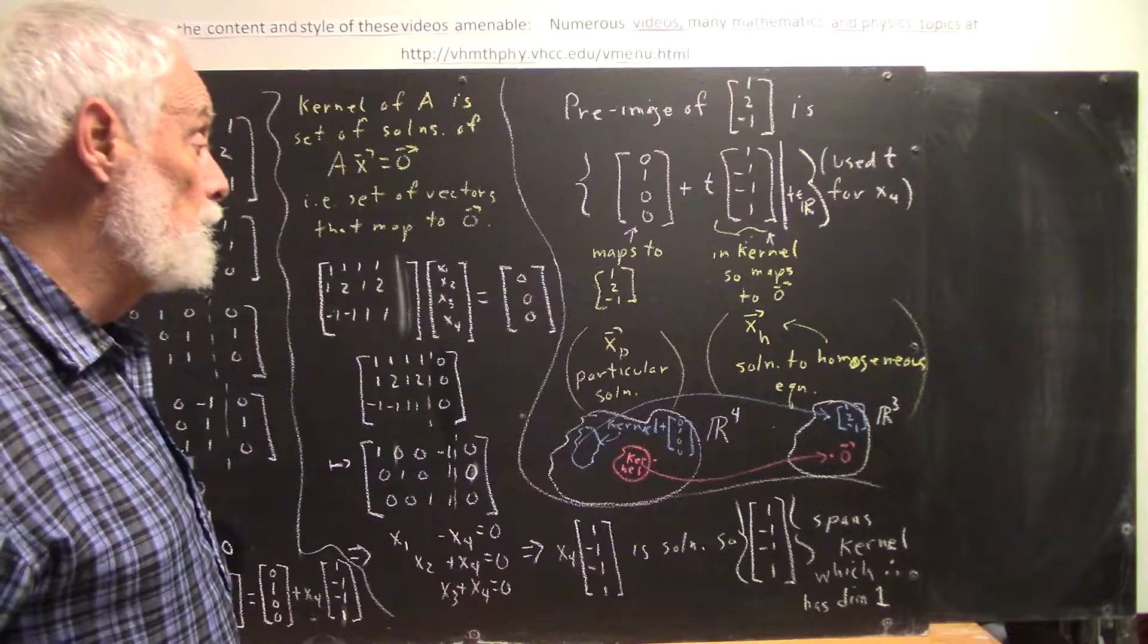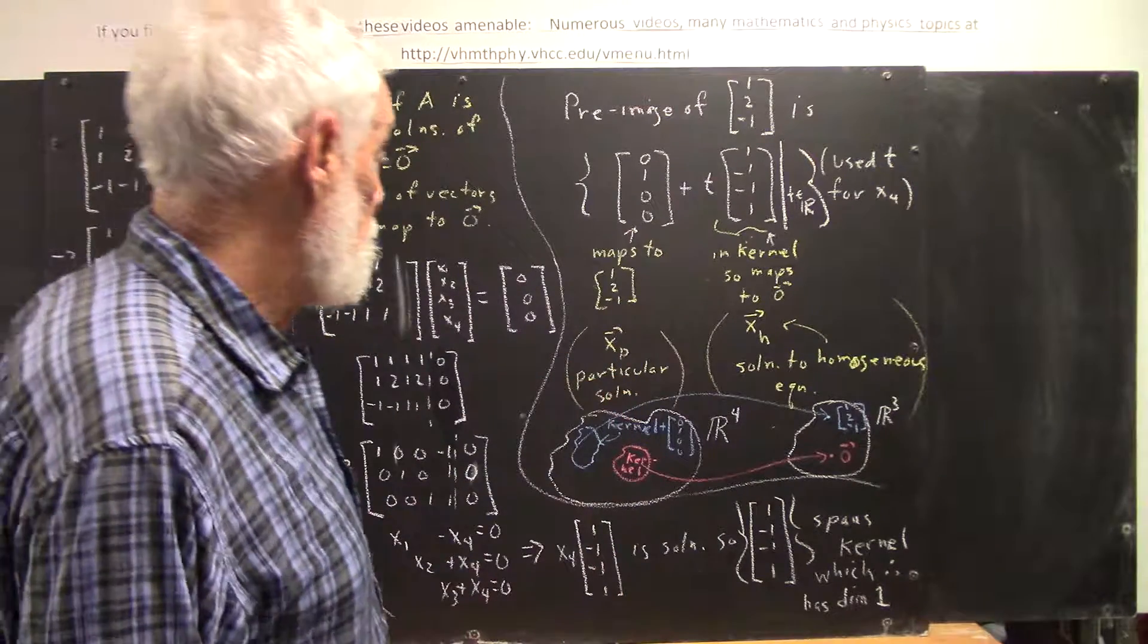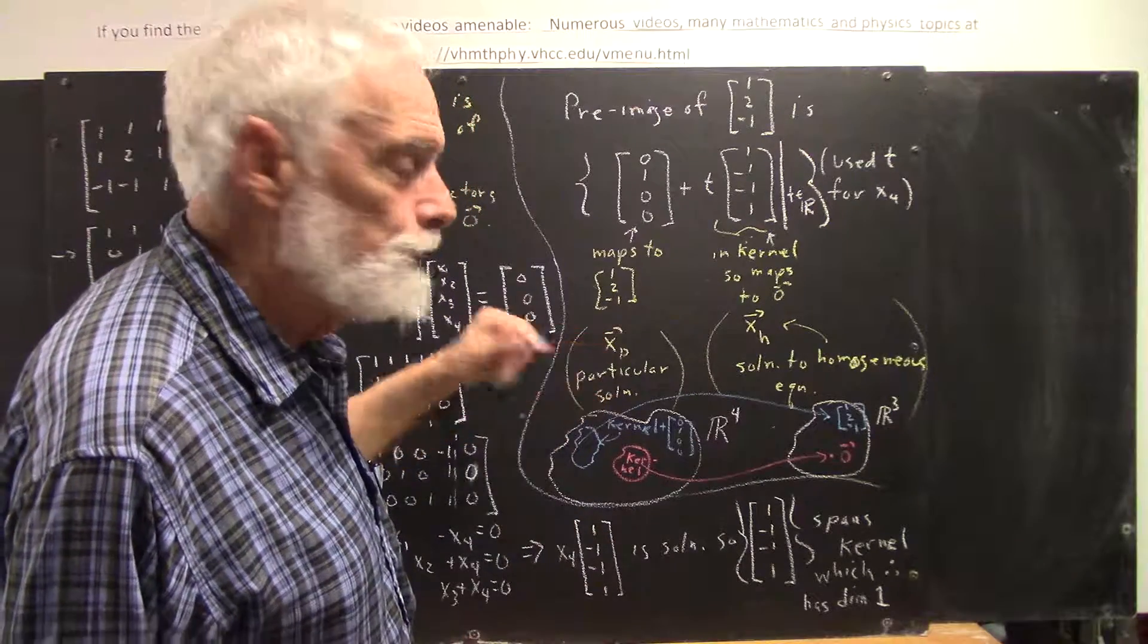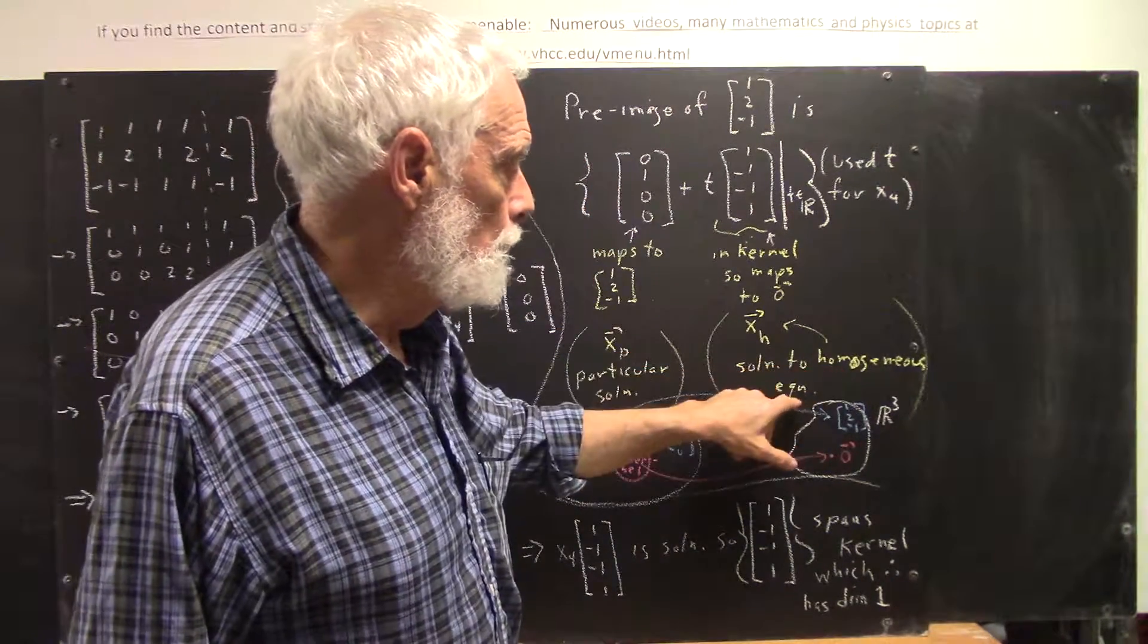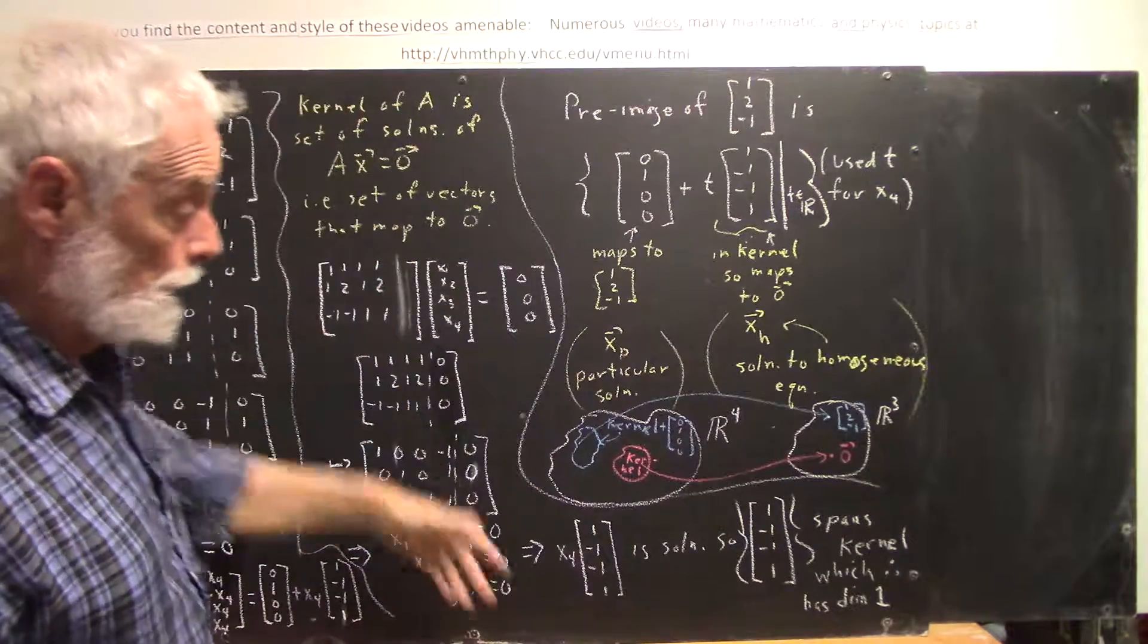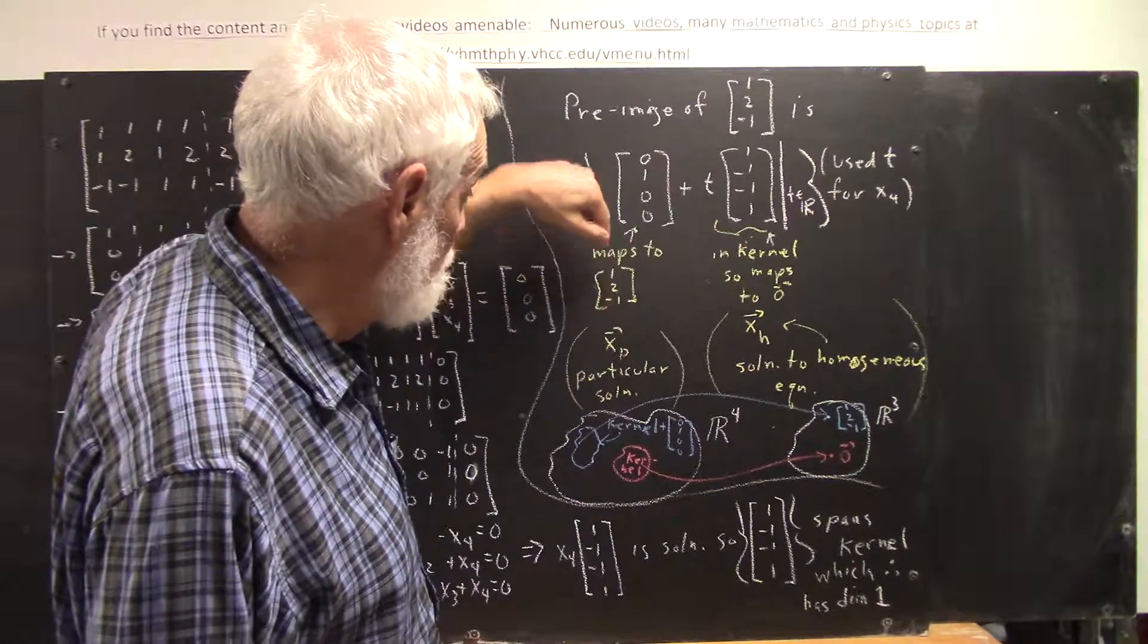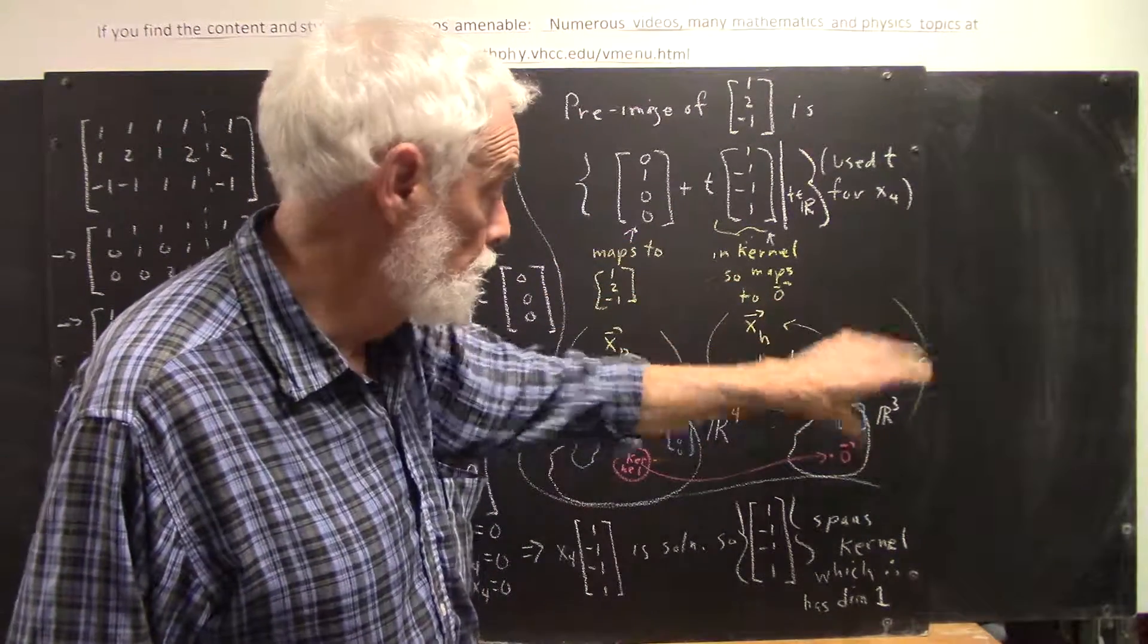There's language that we have used already and we're going to use it here just to relate this to what we've done and what's coming up on the test. We could call this vector X sub P. We could call this vector X sub H, where X sub P stands for particular solution, a vector that maps on to this, and X sub H is a solution to the homogeneous equation, the homogeneous equation being AX equals 0. Your pre-image consists of vectors X equals XP plus XH, where XP is this vector, XH is any vector in your kernel, any solution to the homogeneous equation.